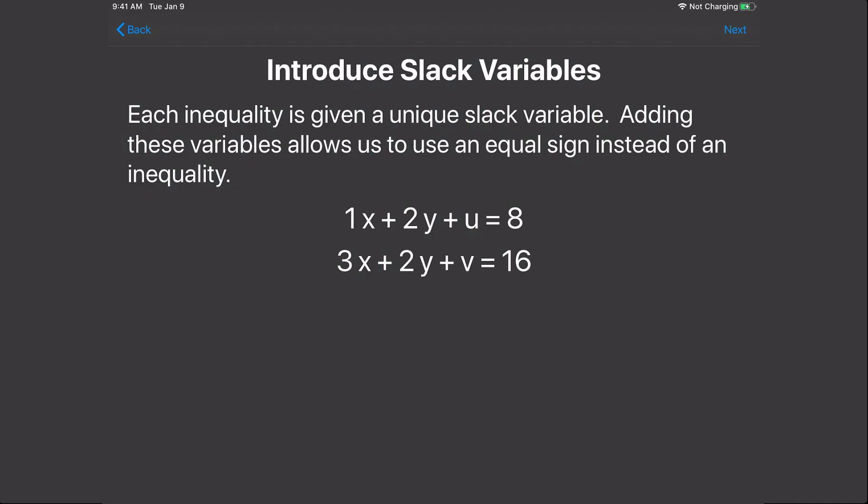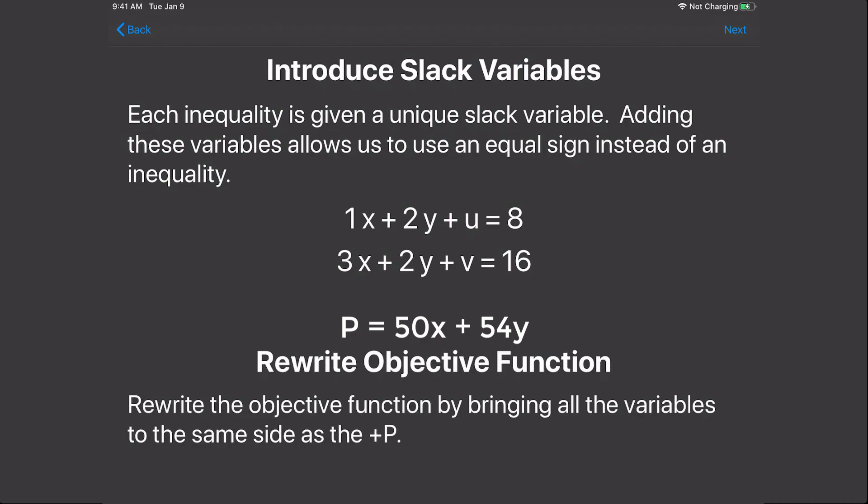We don't do anything to the x and y being greater than or equal to 0. The next step is to rewrite the objective function p equals 50x plus 54y. We do this by bringing the x and y terms over to the left side with the p. It's now going to be negative 50x minus 54y plus p equals 0.